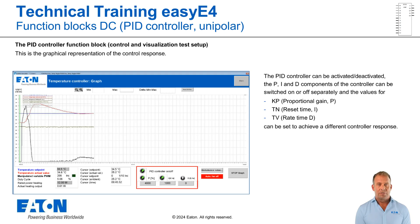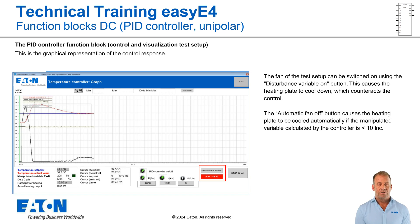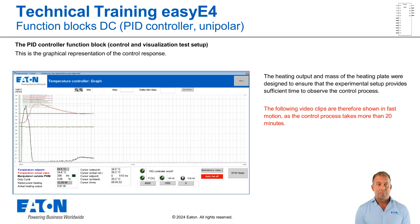To determine useful control parameters, the parameters for the P, I and D components can be set and activated or deactivated separately. KP is indicated as a percentage — the value 4000% represents a 40-fold proportional amplification. Reset and rate times are set in 0.1 second units, so a reset time of 1000 results in a time value of 100 seconds. The fan of the test setup can be switched on using the disturbance variable on button, causing the heating plate to cool down and the control mechanism to work in the opposite direction. The automatic fan off causes the heating plate to be cooled automatically if the manipulated variable calculated by the controller is lower than 10 increments. The control process takes a little more than 20 minutes in real time, which is why the following recordings are played back at several times the normal speed.